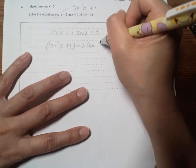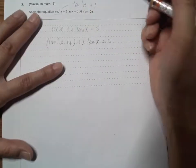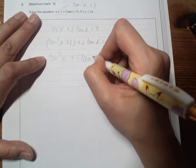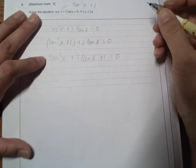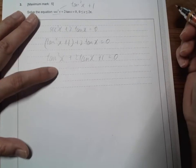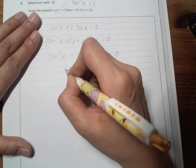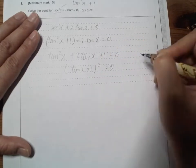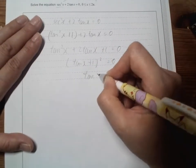Then put into a quadratic: tan²x + 2tan(x) + 1 = 0. And that gives us (tan(x) + 1)² = 0, so tan(x) equals negative 1.